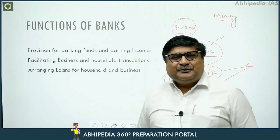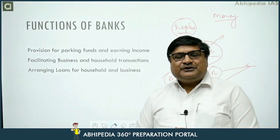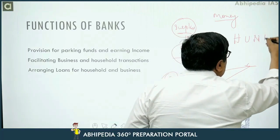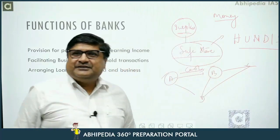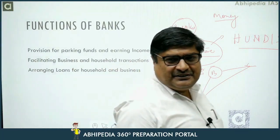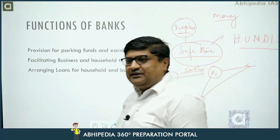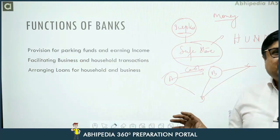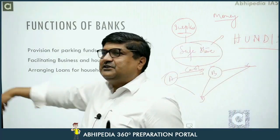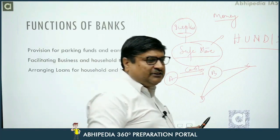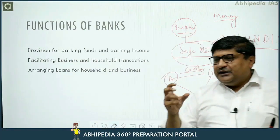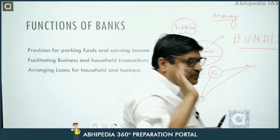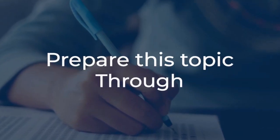I will write this down. The answer relates to Hundis. A traditional moneylender — a seth — used to facilitate Hundis. It was their own channel of rotating money from A to B. For example, if I had to trade with someone in another city, I would take a Hundi from a seth that was recognized there, purchase it, and use it to complete the transaction.